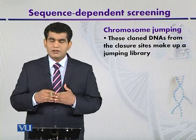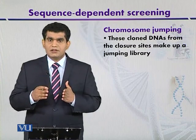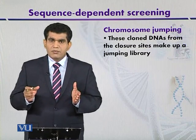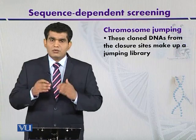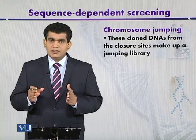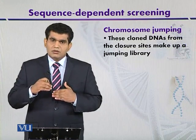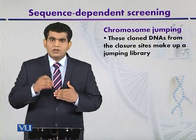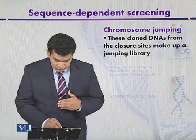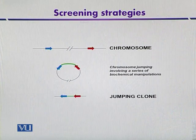Those fragments from the closure sites or the junctions are cloned further, and such DNAs cloned from the closure sites constitute the jumping libraries. In jumping libraries, the genes that are present far apart can come close to each other, and then after digestion the target DNA is cloned into an appropriate vector.